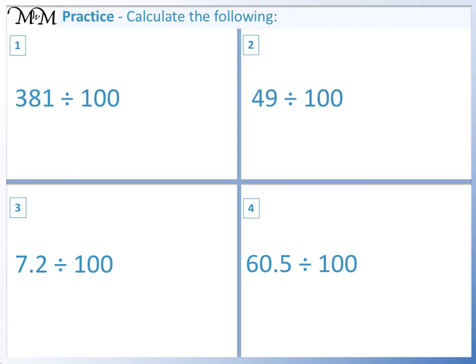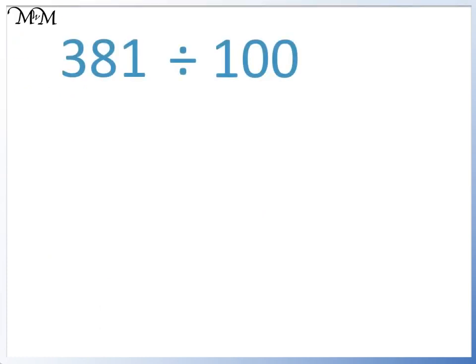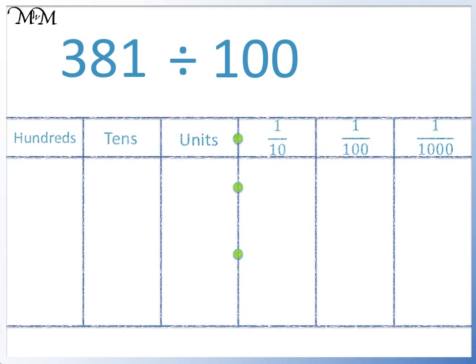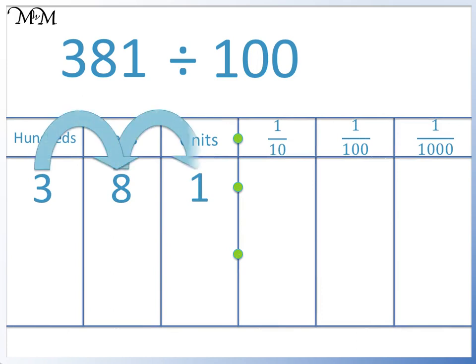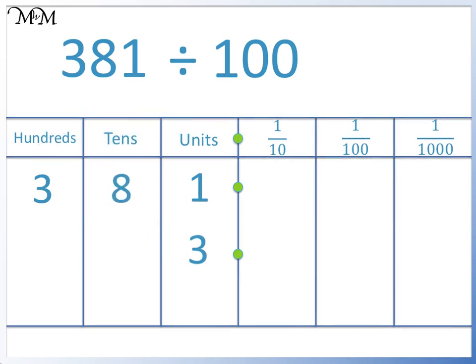Here are some questions for you to try. Pause the video now and have a go. Question 1: 381 divided by 100. Starting with the 3, we move two places to the right. We move the 3 to the units column, the 8 to the tenths column, and the 1 to the hundredths column. 381 divided by 100 equals 3.81.